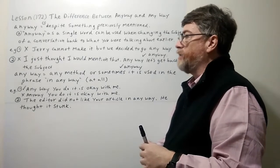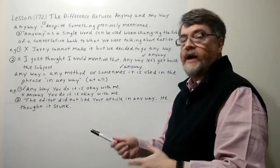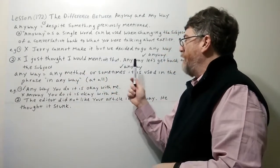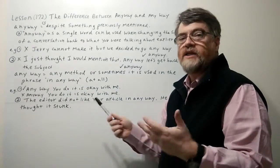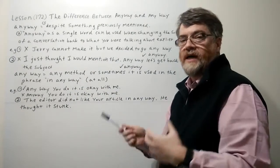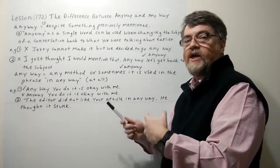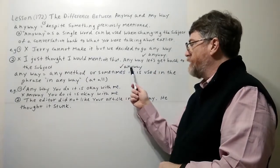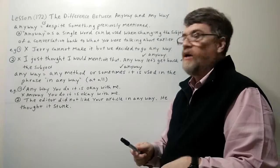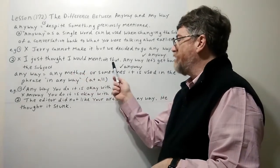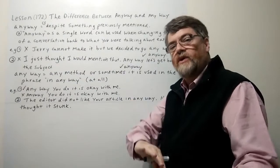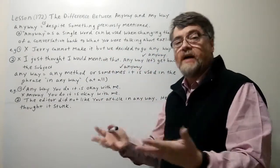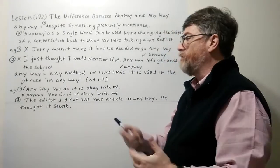Now let's look at the second example, again marked with an X for the wrong usage. 'I just thought I would mention that — anyway, let's get back to the subject.' This is one where you're changing the subject. In this situation, 'anyway' should be one word, so if you wrote it as two words that would be wrong. With the checkmark, it is correct — you're using this word to show somebody that you're changing the subject and getting back to the topic.